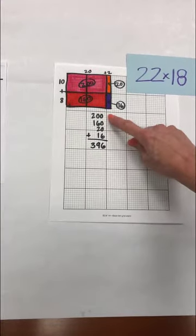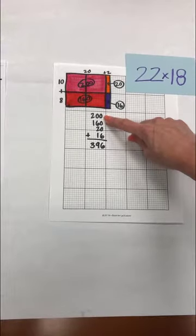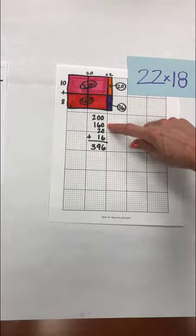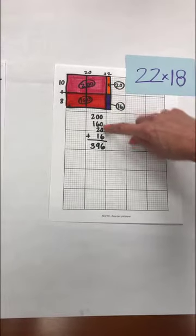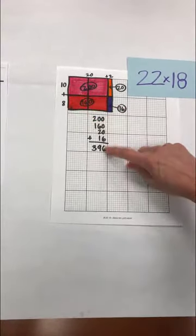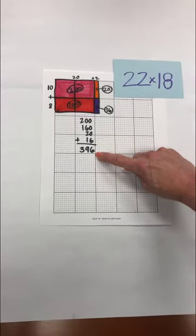So when we add those factors together we would have 200 plus 160 plus 20 plus our 16 which gives us a product of 396.